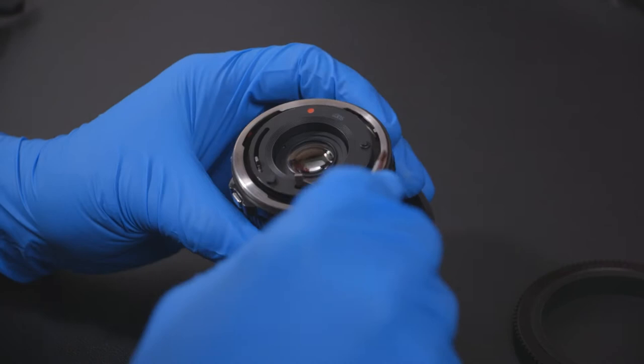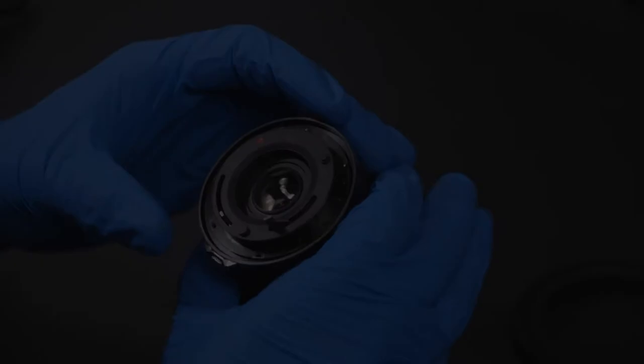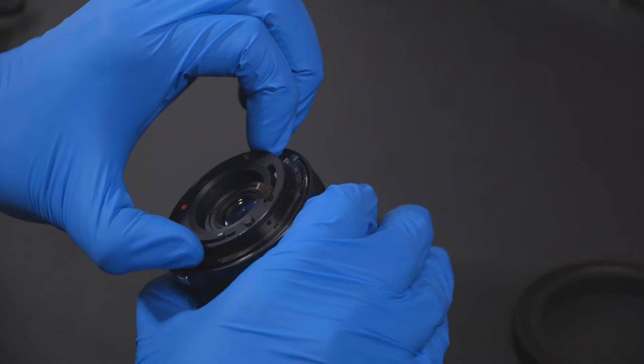Next, we will remove the chrome ring at the end of your lens. Twist and lift to remove the FD mount from your lens.